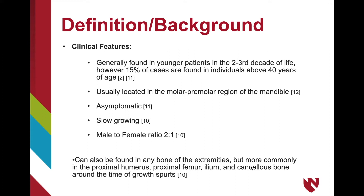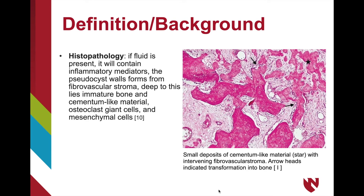During this time, the proximal humerus, proximal femur, ileum, and cancellous bones are affected most. Histological findings include inflammatory mediators if fluid is present. The pseudocyst walls form from fibrovascular stroma with immature bone, cementum-like material, osteoclast giant cells, and mesenchymal cells found deep to the stroma.